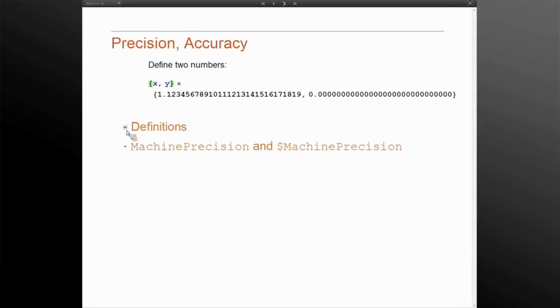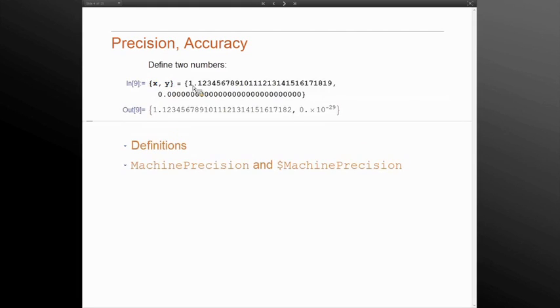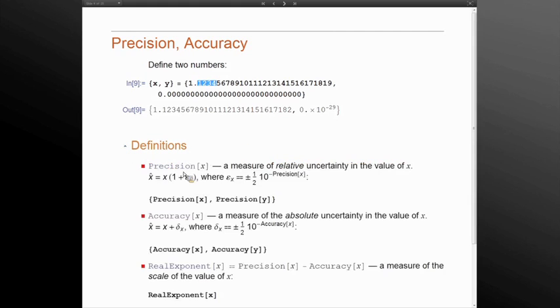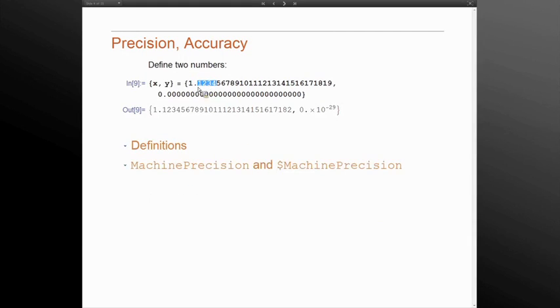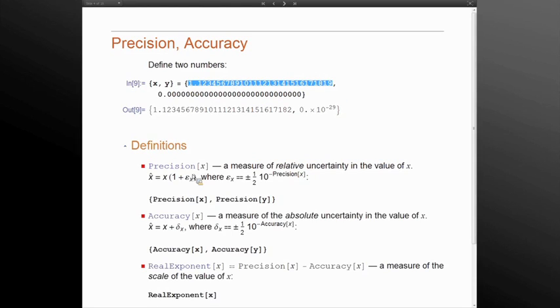Now it becomes important to introduce a notion of precision and accuracy. We will define two numbers. One would be some positive number which contains exactly 29 decimal digits after the dot and some zero number. We should think about these numbers as sort of an interval because if you think of all the real numbers which contain many more digits, we identify all those numbers with this number.